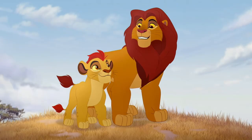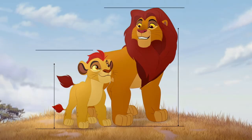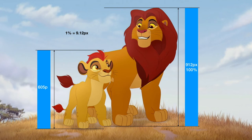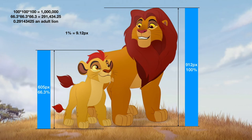Kyan is the next character. This image is very convenient as he is next to an adult lion, Simba. Simba is 912 pixels tall, representing 100% of an adult lion, so 1% is 9.12 pixels. Kyan is 605 pixels high, meaning he is 66.3% the height of an adult lion. Cubing these two numbers gives 1,291,434.25 — wait, that should be 0.29143425 of an adult lion. Adult lions weigh around 200 kilograms, meaning Kyan weighs 58.3 kilograms.